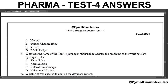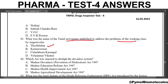What is the name of the Tamil newspaper published to address the problems of the working class by Singaravelar? The answer is Tozhilalan. Singaravelar was a pioneer in labour movement activities in the Madras Presidency. Next question: which act was enacted to abolish the Devadasi system? The answer is the Madras Devadasi's Prevention of Dedication Act of 1947, brought by Muthulakshmi Ammayar.